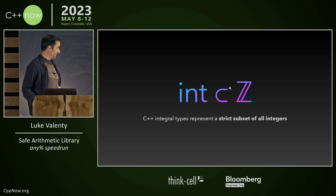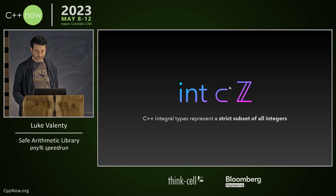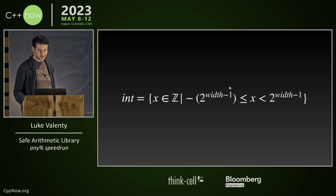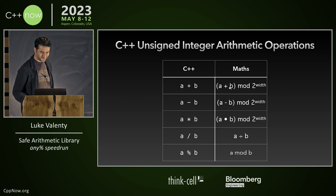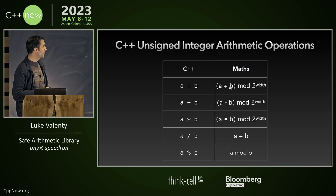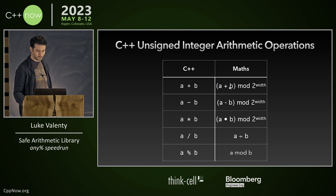The problem with C++ and our integral types is that they represent only a strict subset of all integers, so they're not real integers. Unsigned ints go from 0 to 2 to the width, and signed ints go from a different range, which is more strange. Our unsigned integer operations are actually mod 2 to the width, and so they don't correspond to what we intend to use them for most of the time.